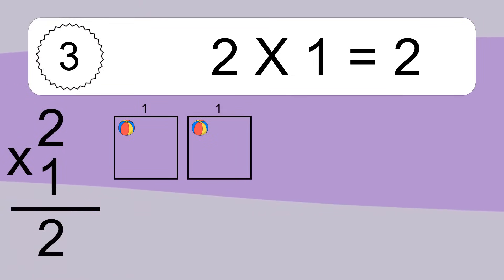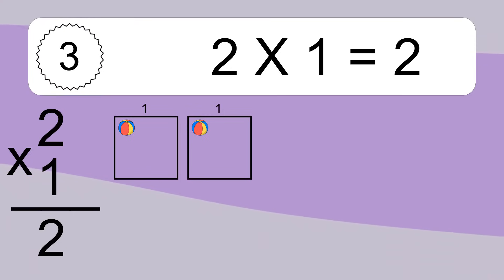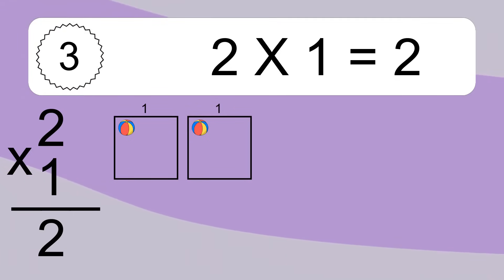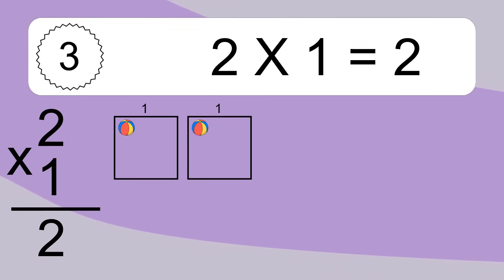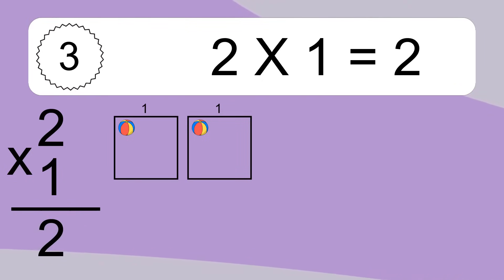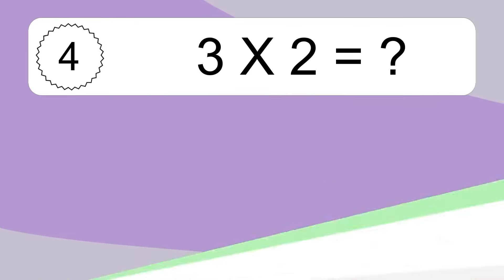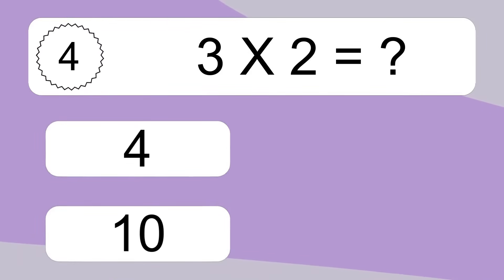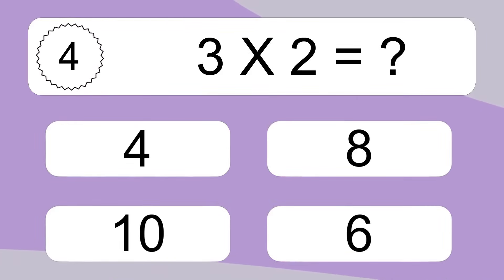We have 2 boxes and each box has 1 colorful ball inside. If you count all the balls in all the boxes together, you will have 2 times 1 balls. This equals 2 balls.